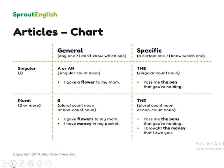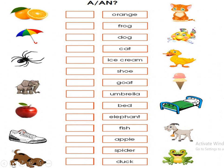Here is the final articles chart. For general purposes, we use 'a' or 'an' for singular nouns and omit the article for plural nouns. For specific purposes, we use 'the' for both singular and plural nouns. Now here is an exercise: what should the article be — A or AN — before each of the following words? Orange, Frog, Dog, Cat, Ice Cream, Shoe, Goat, Umbrella, Bed, Elephant, Fish, Apple, Spider, and Duck.